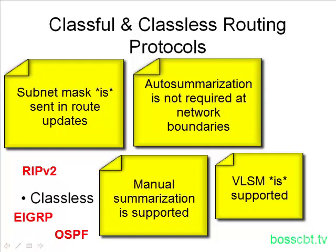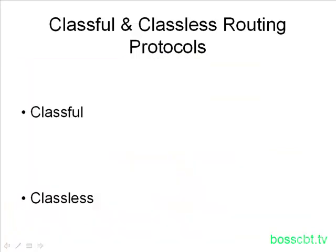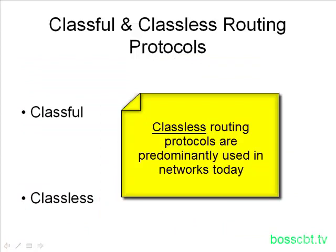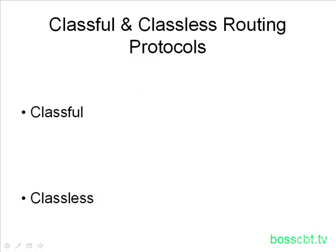These are the two categories. More often than not today, you're going to come across classless routing protocols in production networks, because variable-length subnet masking is so predominantly used throughout networks around the world that the benefits are so great. However, it's important to understand the differences between the two, because you might run into RIP version 1. And even if you never encounter a classful routing protocol, it's important to understand the characteristics of classless routing protocols because you come across them so often.